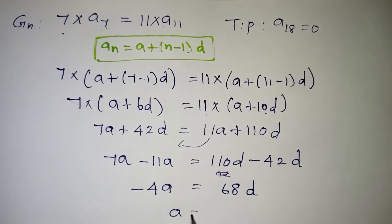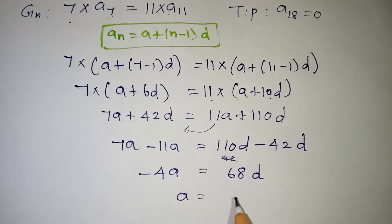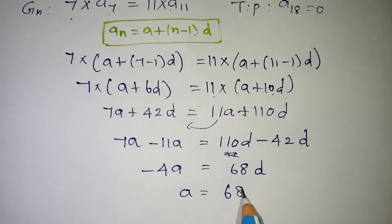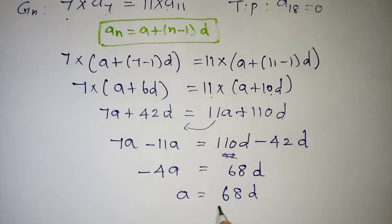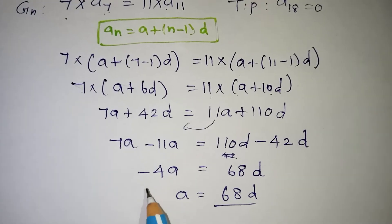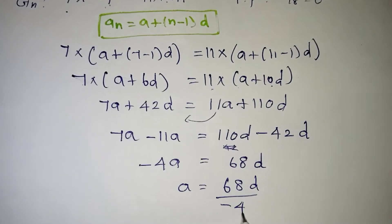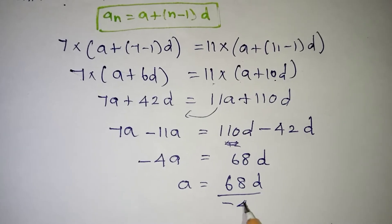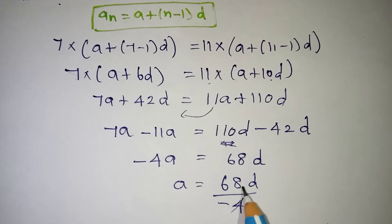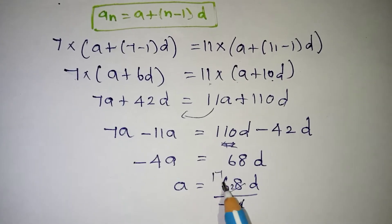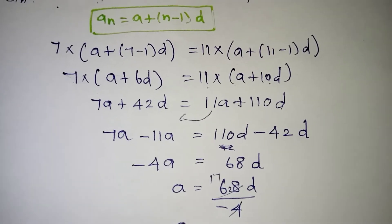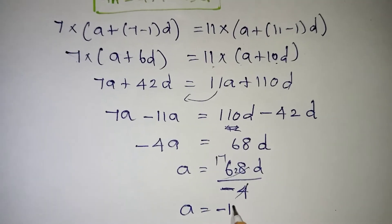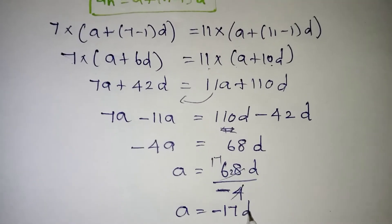Now solve for A. Dividing both sides by -4: A = 68D / -4. The 4s cancel, giving A = -17D. We can note this as equation 1.